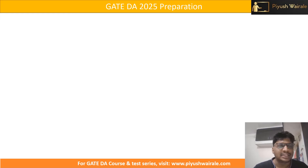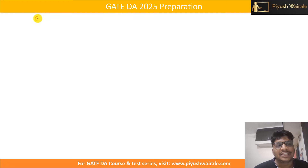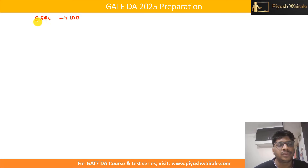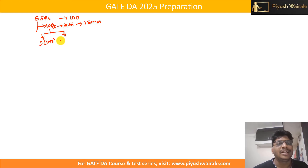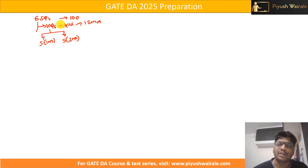Let's discuss the exam pattern. As you know, we have 65 questions for 100 marks. Out of these 65, there are 10 questions for the aptitude part, which consists of 15 marks. Out of these 10 questions, five are for one mark each and five are for two marks each.